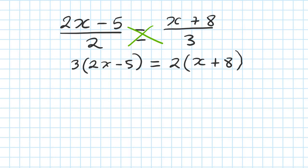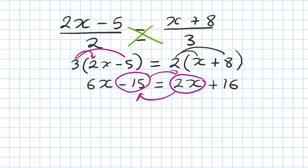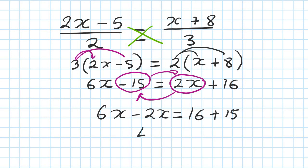Then I remove the bracket by expanding it. 3 times 2x is 6x. 3 times minus 5 is minus 15. And 2 times x is 2x, 2 times 8 is 16. Then I move the terms: minus 15 moves on this side, 2x moves on this side. So 6x minus 2x is equal to 16, and minus 15 moves over, becomes plus 15.